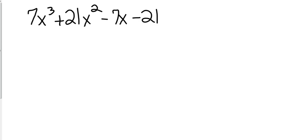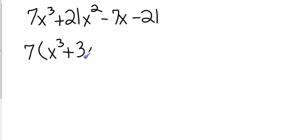For the final problem, we've got a little bit of everything: greatest common factor, grouping, and squares. With four terms, we'll need grouping at some point, but looking at them, they all have a 7 in common. Not all terms have an x — we have x cubed, x squared, x, and then the last term has no x — so we only pull out the 7. Inside the parentheses we get x cubed plus 3x squared minus x minus 3.